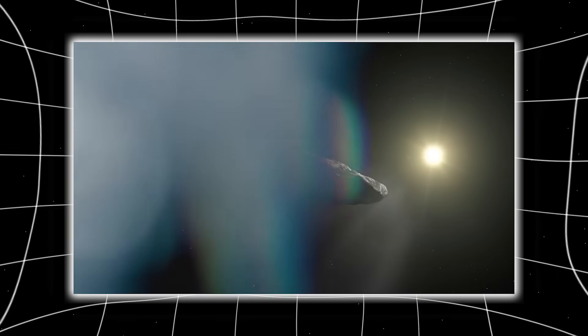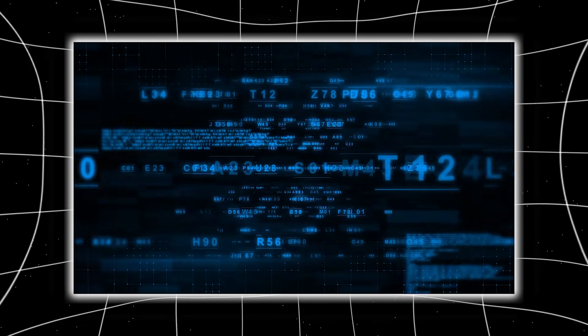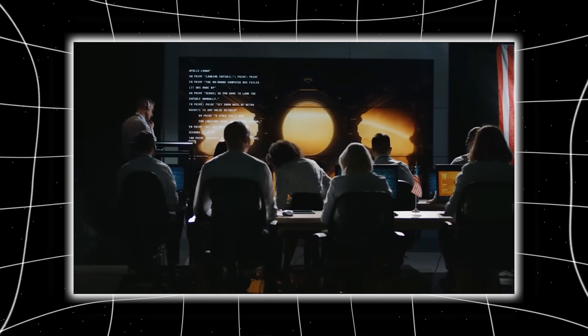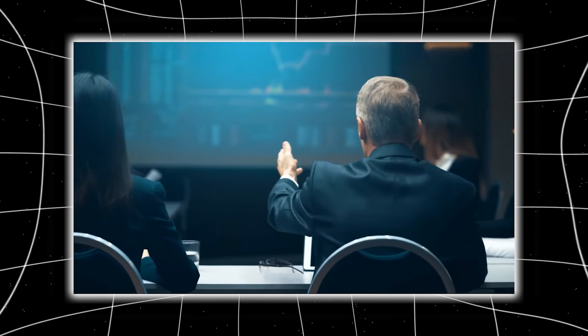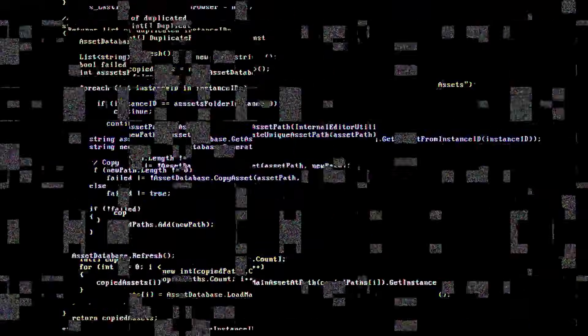This blackout mirrored what happened after Oumuamua, but this time, the reaction was far more intense. One anonymous source compared it to an EMP drill, except the target wasn't Earth. The entire team had been instructed to act as though something, or someone, might already be listening in. Was this damage control? Or were authorities trying to prevent a signal feedback loop, one that could trigger a larger chain of responses, far beyond our control?